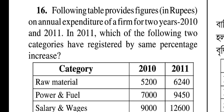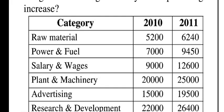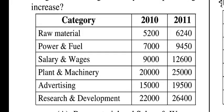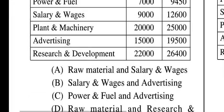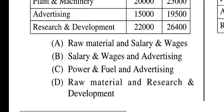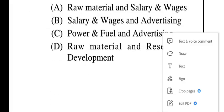Question sixteen is a mathematical question. A table provides figures on annual expenditure of a firm for 2010 and 2011 across categories: raw material, power and fuel, salary and wages, plant and machinery, advertising, research and development. Values in 2010: 5200, 7000, 9000, 20000, 15000, 20000; in 2011: 6240, 9450, 12600, 25000. The question asks which two categories registered the same percentage increase in 2011. Option D is correct: raw material and research and development.